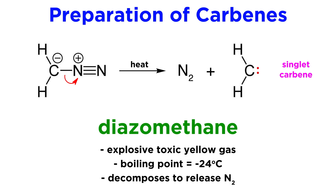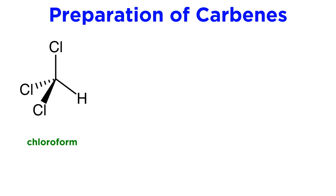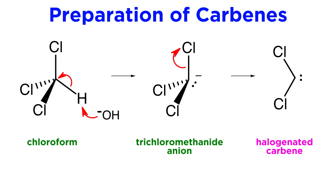Given that these electrons are already paired, this reaction will produce a singlet carbene. We can also form halogenated carbenes, where the carbon bearing the nonbonding electrons is bound to halogens instead of carbons or hydrogens. For example, observe the following reaction of chloroform. If chloroform is deprotonated with strong base, such as hydroxide, it produces the trichloromethanide anion. To neutralize the formal charge, one of the chlorines can leave in the form of a chloride ion, taking both of the electrons in the carbon-chlorine bond with it. This leaves a halogenated carbene, which again will be in the singlet form.